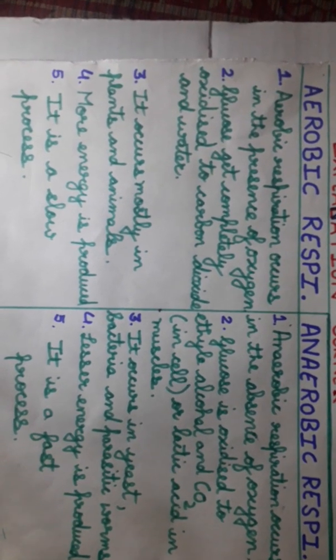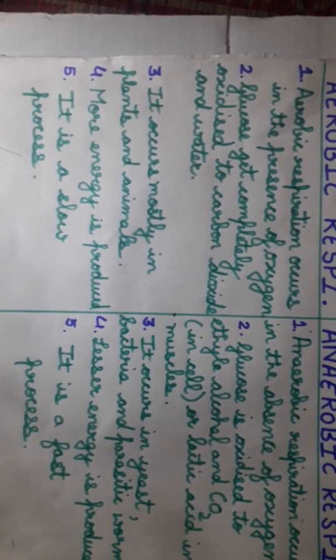Aerobic respiration occurs mostly in plants and animals — yaani jo aerobic respiration hai woh zyadatar plants aur animals mein hoti hai. Animals mein humans bhi included hain — plants aur animals zyadatar aerobic respiration karte hain.